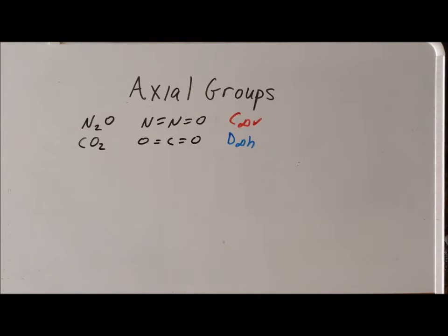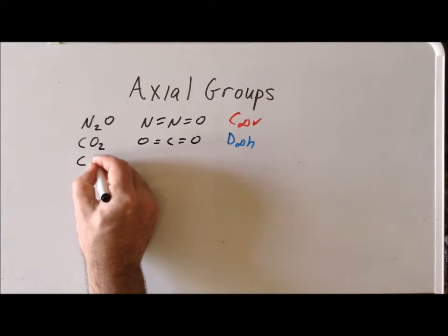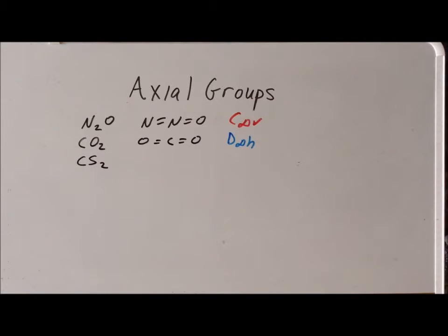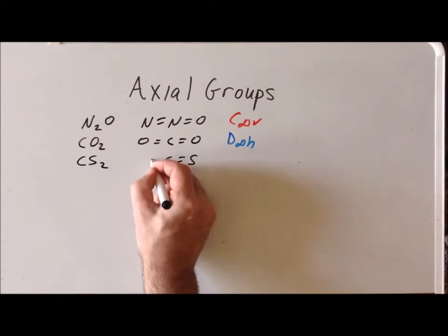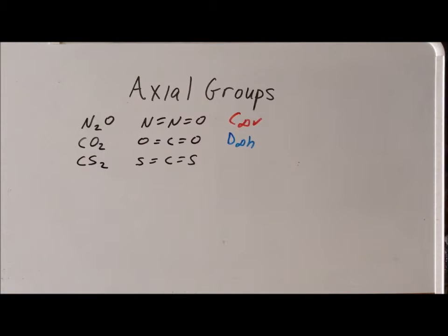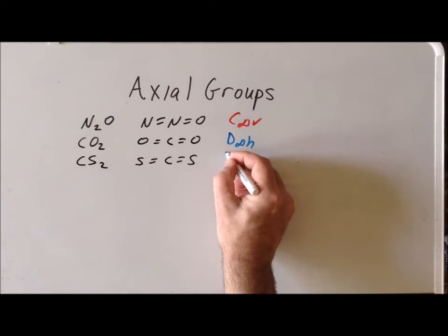Next, we can look at the important liquid solvent carbon disulfide, CS2. Once we are familiar with the structure of carbon dioxide and the periodic relationships in the periodic table, we can almost immediately write down the structure of carbon disulfide by replacing the oxygens with sulfur atoms. We have an identical, also linear structure, and by the same reasoning used for CO2, we can immediately recognize that CS2 belongs to the point group D∞h.